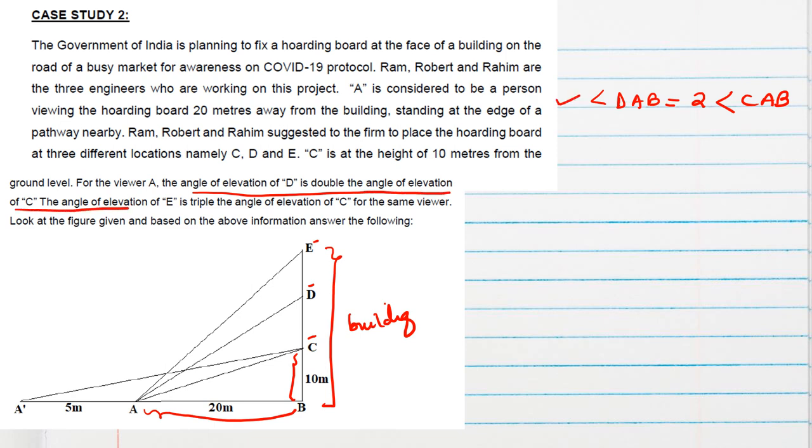Then angle of elevation of E, that means EAB, is triple the angle of elevation of C for the same weaver. For the weaver at A position, triple the angle of elevation at C that means 3 times angle CAB. Look at the figure given and based on the above information answer the following. Now we will come to the question.